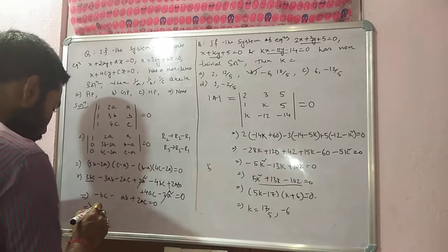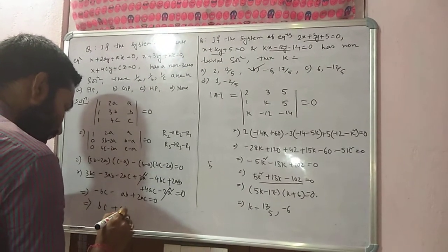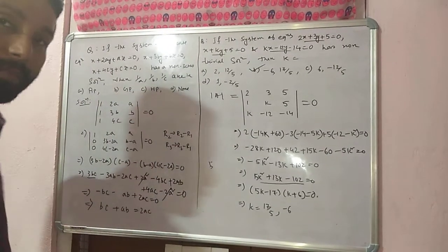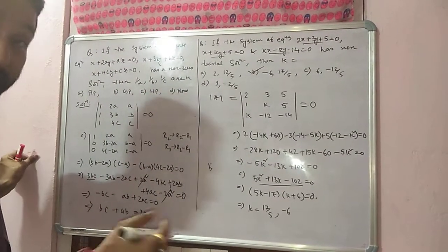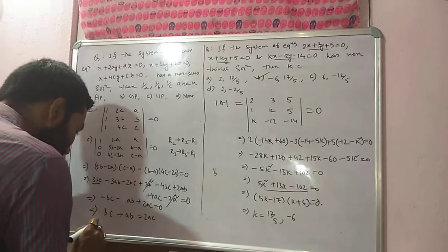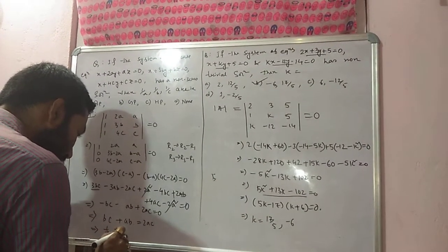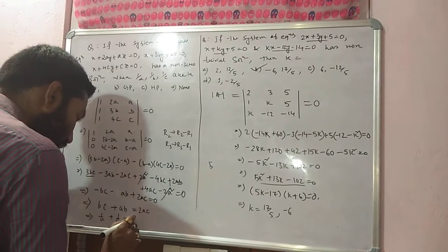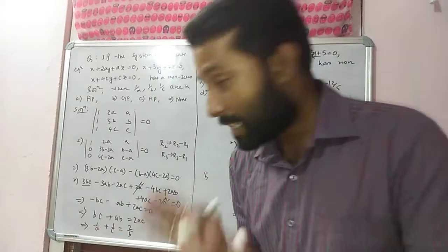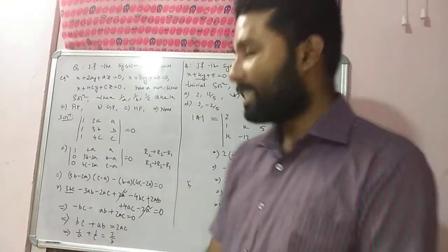So minus 2AB plus 2AB becomes minus AB. Minus BC minus 2AC is equal to zero. From here, if I take minus common, BC plus AB. I can write the right-hand side in 2AC form. After that, if you divide both sides by ABC, what will be the first term then? 1 by A plus 1 by C, which is equal to 2 by B.